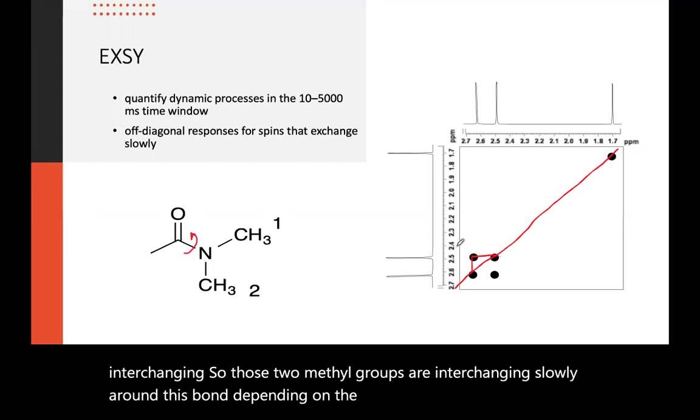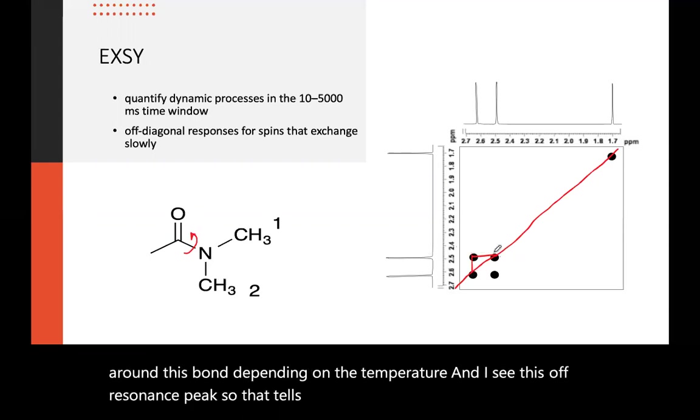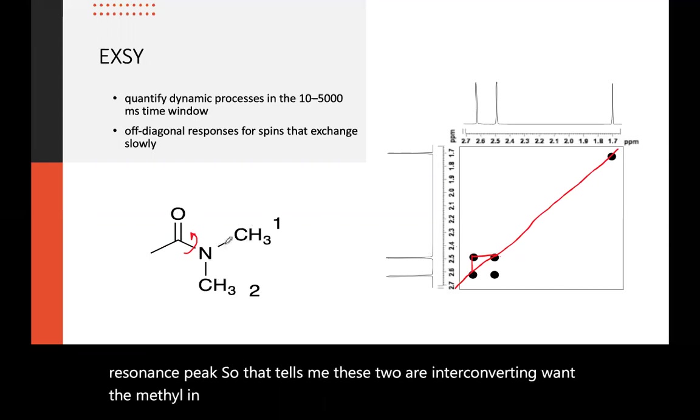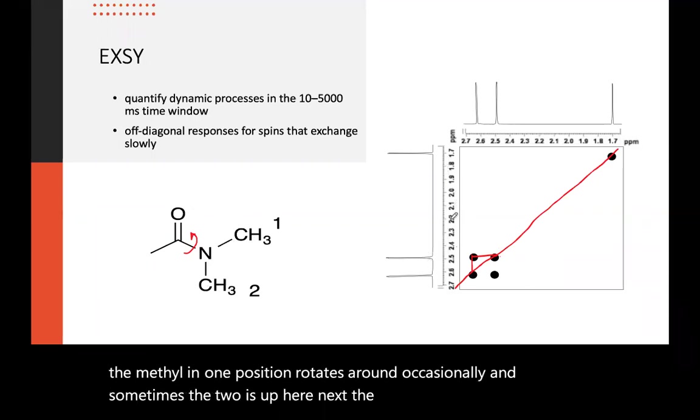And I see this off resonance peak. So that tells me these two are interconverting. The methyl in one position rotates around occasionally. And sometimes the two is up here next to the oxygen, cis to the oxygen.